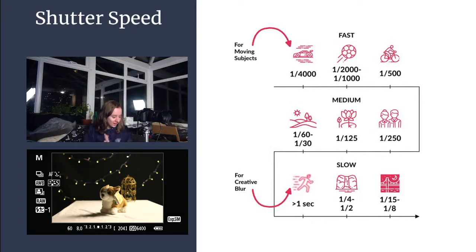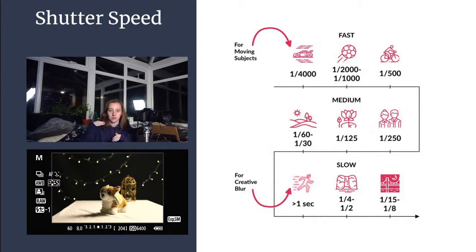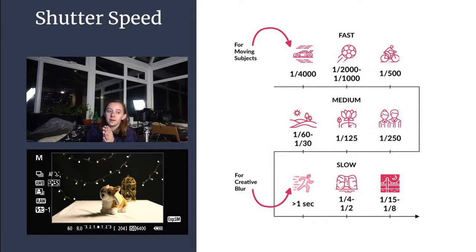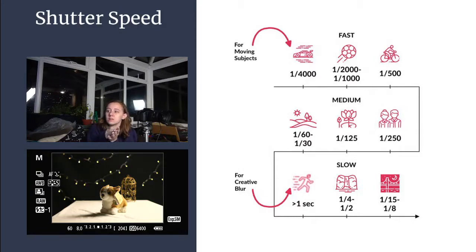Shutter speed — as I spoke about in the anatomy of a camera session, which is now on YouTube, this controls the amount of time that your sensor is exposed for. If you expose the sensor for a long time, more light is gathered because it's got more time to collect it; a really quick shutter speed means it doesn't have much time to gather light at all. As you can see on the diagram, shutter speed allows you to freeze different things in motion. For fast shutter speeds you can use this for sports where you need to freeze an instant without getting blur. For medium shutter speeds — around 1/250th — this is for general use where your subject isn't moving fast and you can handhold without camera shake.